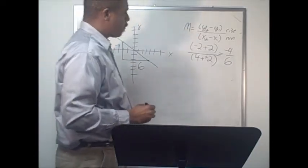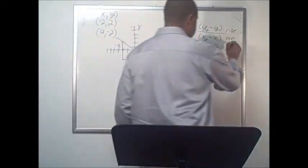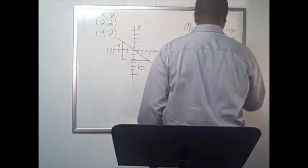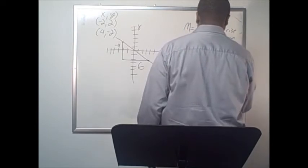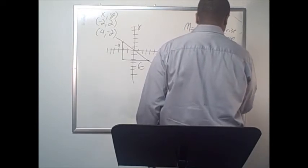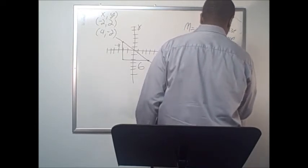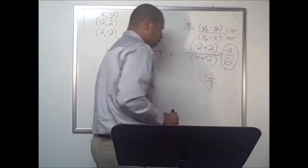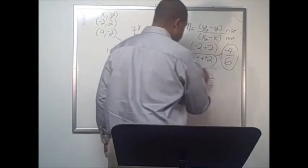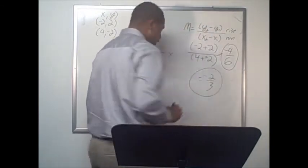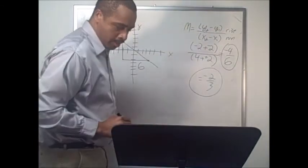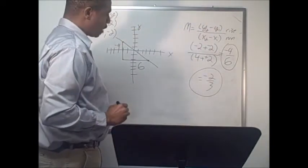That is how you find the slope of a line. We can simplify that fraction, reducing negative four over six down to negative two thirds, and that is the slope of your line.